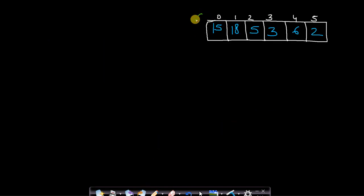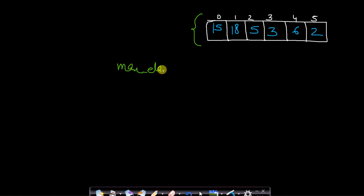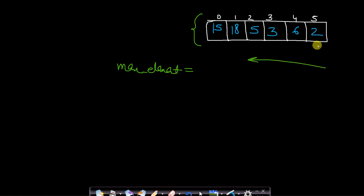Let us assume the same array: 15, 18, 5, 3, 6, and 2. What can be an efficient approach in order to find all the leaders in an array? We will take a variable known as max_element which will keep track of the maximum element seen so far, and instead of traversing from left to right we will traverse from right to left.